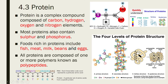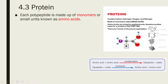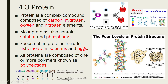All proteins are composed of one or more polymers known as polypeptides. In other words, the other name for protein is polypeptide. Structurally, there are four levels: primary, secondary, tertiary, and quaternary structure.